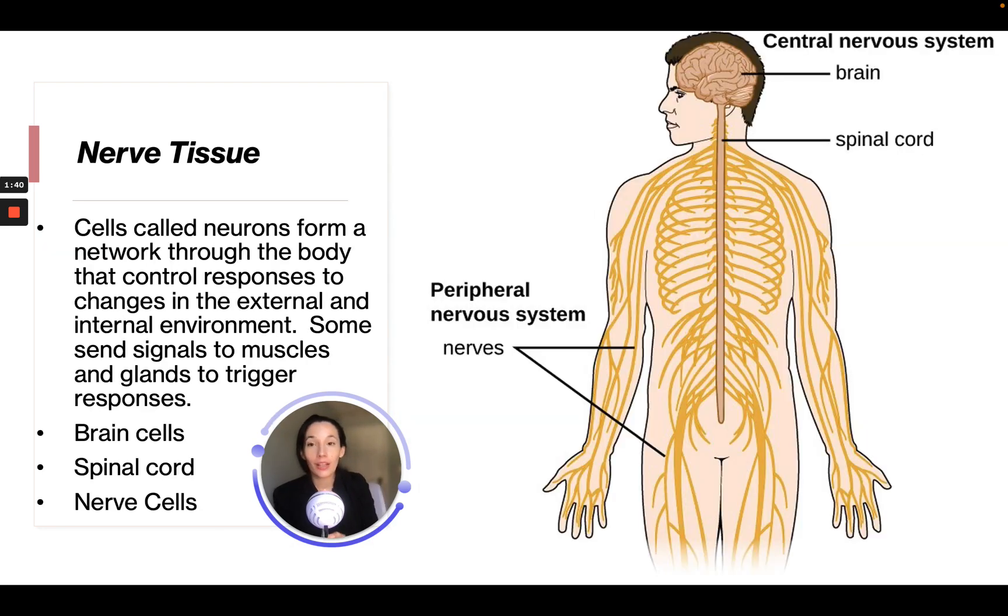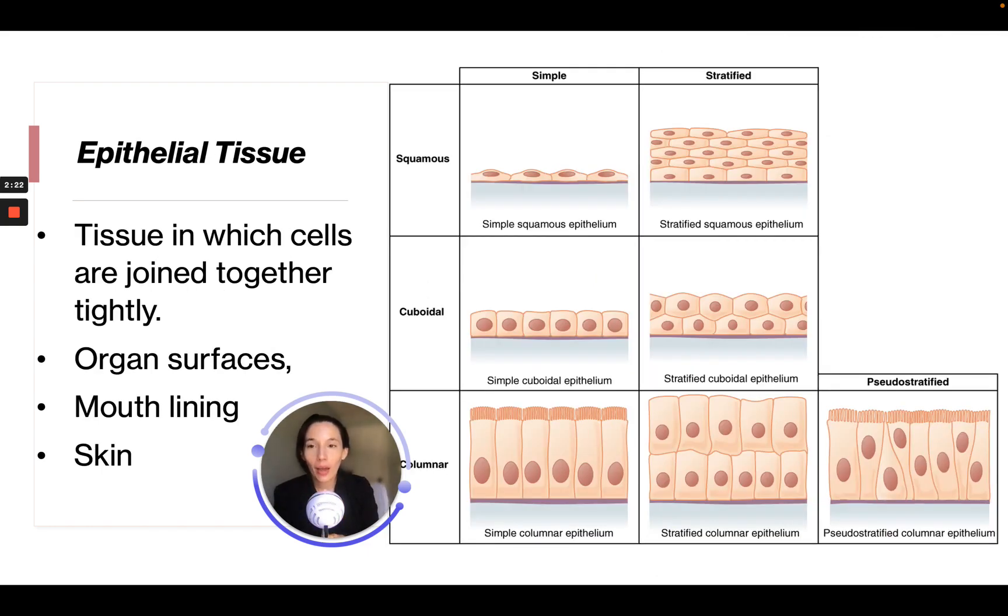Then nervous tissue. Cells called neurons form a network throughout the body that control responses to changes in the external and internal environment. Some send signals to muscles and glands to trigger responses. There are brain cells, spinal cord, and nerve cells. This is all the central nervous system. We have the spinal column, the brain—those are both the central nervous system. And then this gold coming off, these are all the nerves and the peripheral nervous system. So we can think central in the middle, peripheral on the outside.